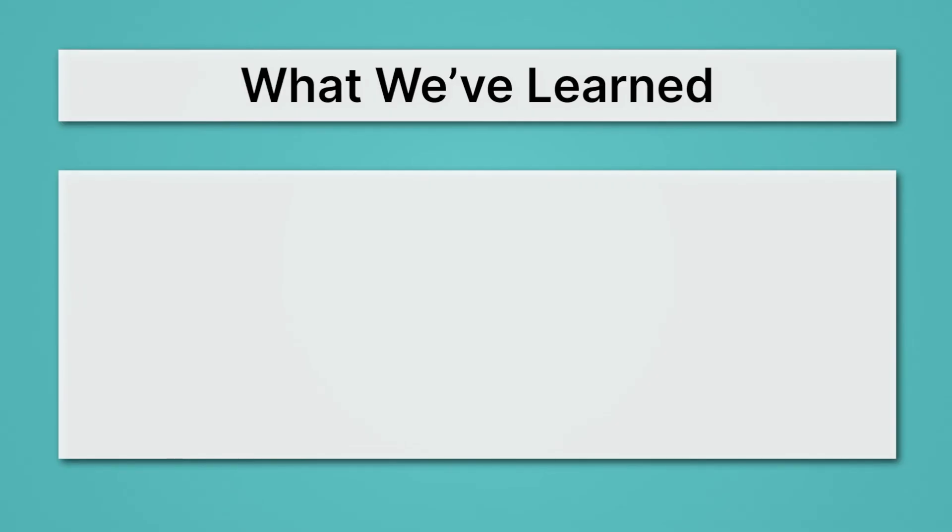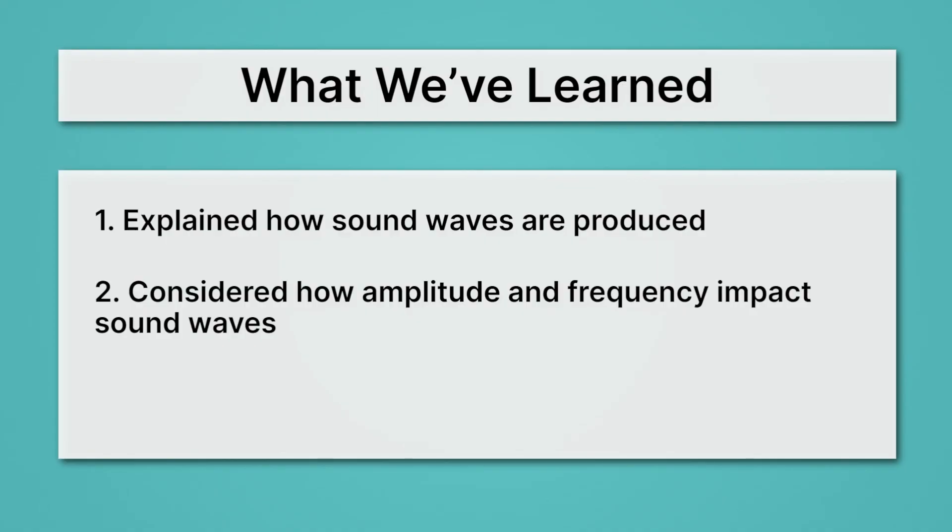Let's review what we've learned. First, we explained how sound waves are produced. Things like strings or speakers vibrate, creating a series of compressions and a series of rarefactions. Then we consider how amplitude and frequency impact sound waves. Amplitude impacts the volume and frequency impacts the pitch. And lastly, we learned to calculate the frequency of sound.